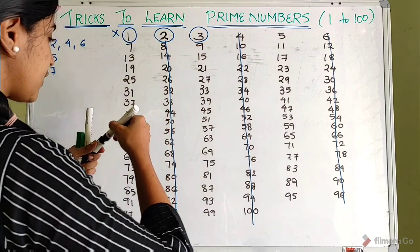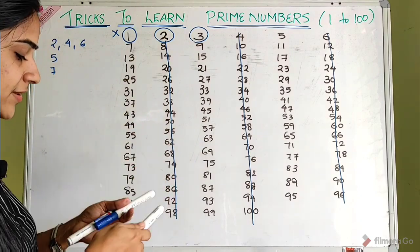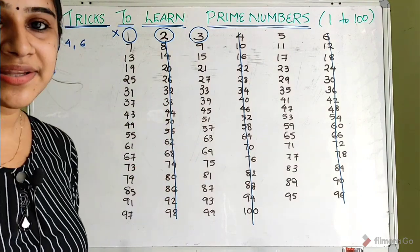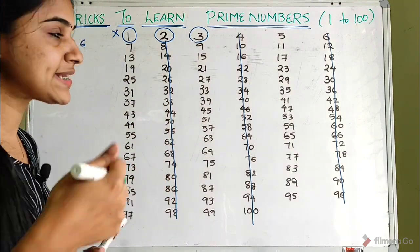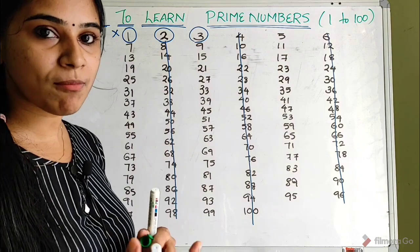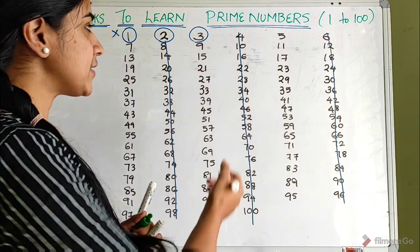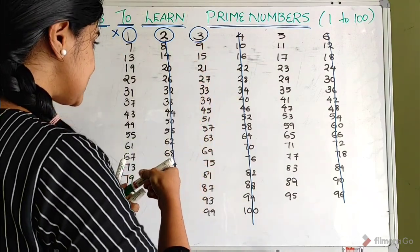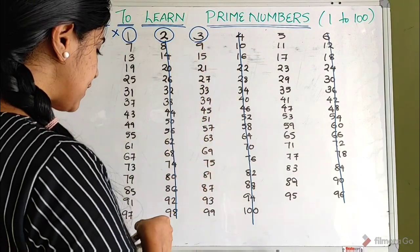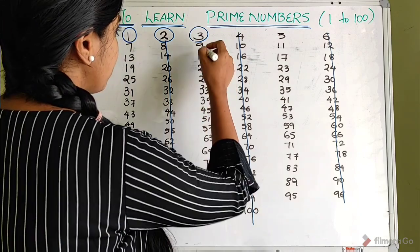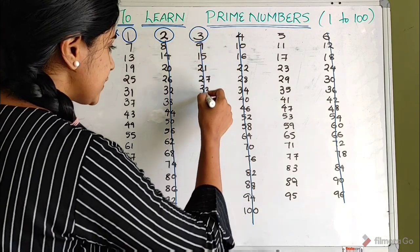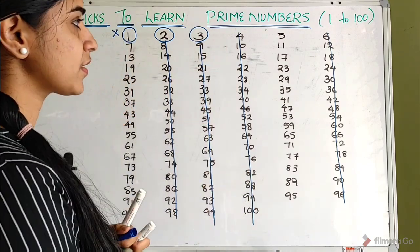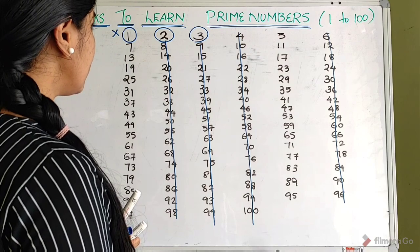Next, 3 becomes prime. We have to write 3 as Prime. If you have a multiple, then those are composite numbers. So three is prime; we write it as Prime, and we delete the multiples of 3.